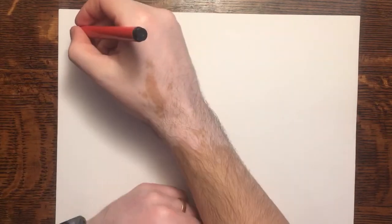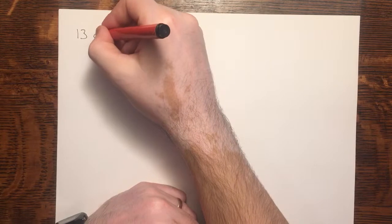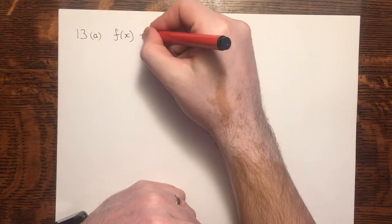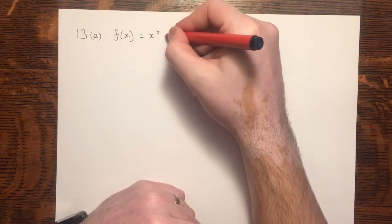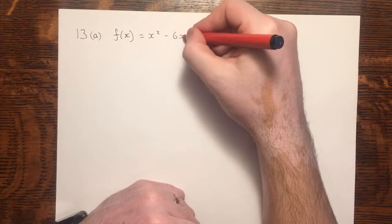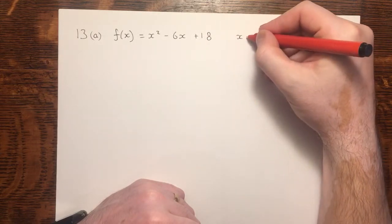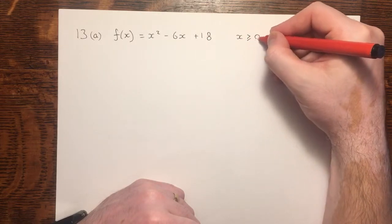In question 13, we are given a function. That function, f of x, is x squared minus 6x plus 18. We are also told that x is greater than or equal to 0.